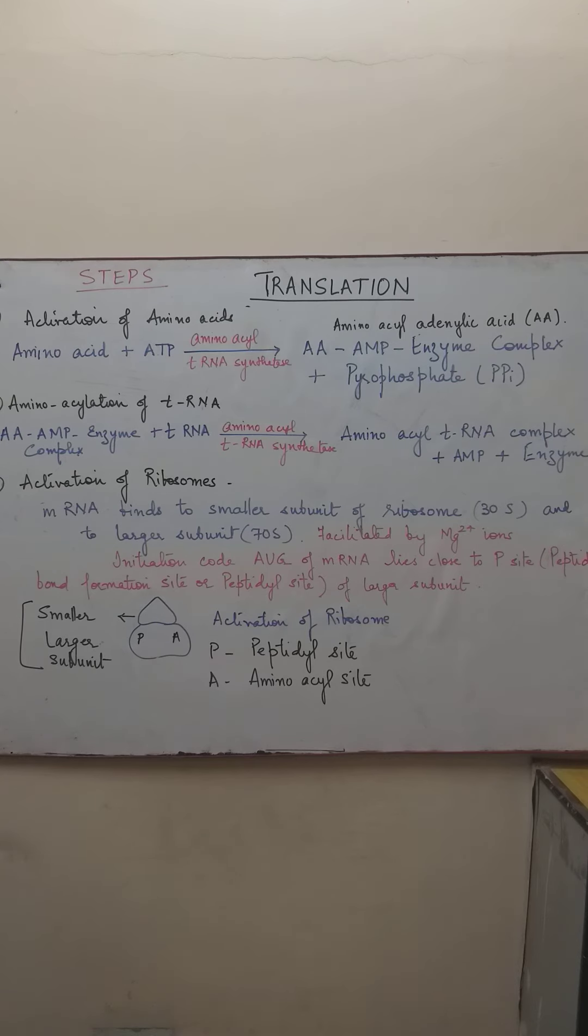This process of translation involves first the mRNA, the tRNA. The mRNA is carrying all the genetic information, then the tRNA is the transfer RNA that transfers the information. The ribosomes are utilized for the conversion of this information into amino acids, that is protein. Then also it is having the amino acids which are required and the ATP. Apart from this, the enzymes are utilized for this entire process.